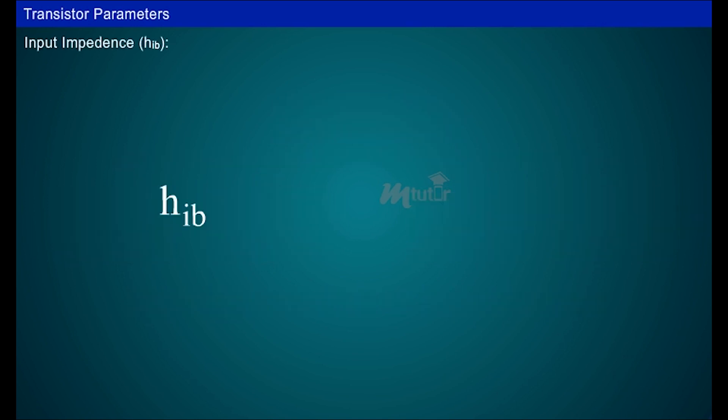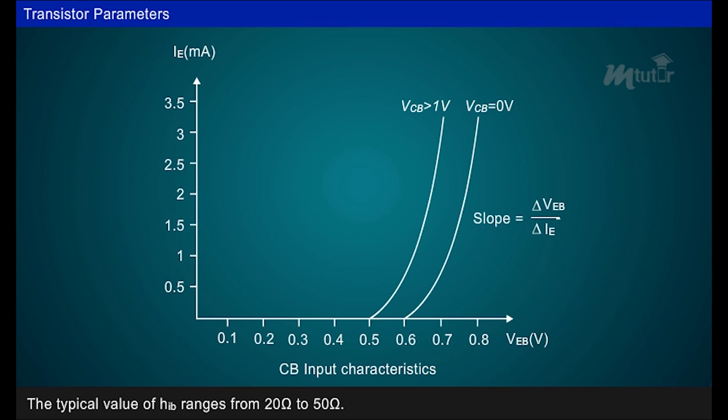Input impedance, HIB is the ratio of the change in emitter base voltage to the change in emitter current with the collector base voltage, VCB, kept constant. It is the slope of CB input characteristics, IE versus VEB. The typical value of HIB ranges from 20 to 50 ohm.